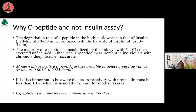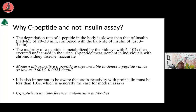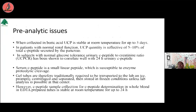As with any assay, we should know the limitations and where we can get false reports. If you are seeing an abnormally high C-peptide report, think of cross-reactivity with anti-insulin antibodies. Any patient on chronic insulin therapy may have anti-insulin antibodies, and some patients can have de novo high titers. If you have an abnormally high or unexpectedly low C-peptide value, always think of assay interference — that is one thing which has to be kept in mind.